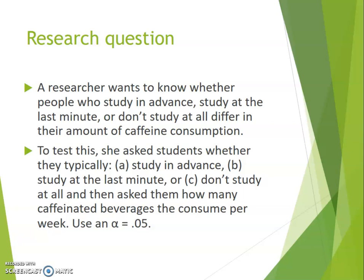We also know that variable is a quasi-independent variable because participants are choosing which group they're in. In order for something to be a true independent variable, the researcher has to randomly assign people to groups. Since participants themselves are choosing which of the three groups they're in, that's what makes it quasi-independent. We handle the analysis the same way regardless, but our conclusion must not imply causality since this is a quasi-independent variable.